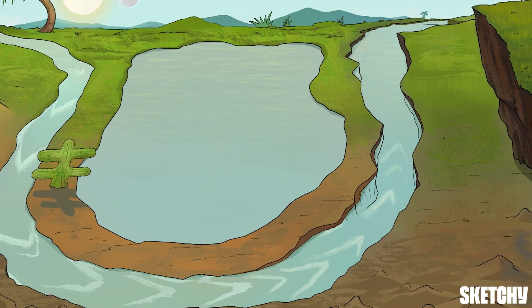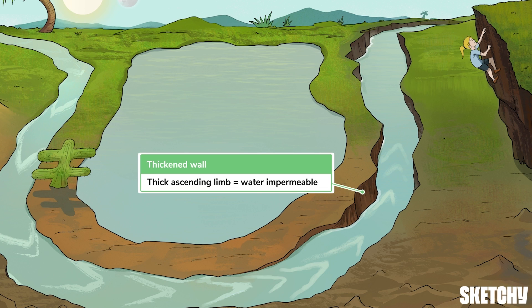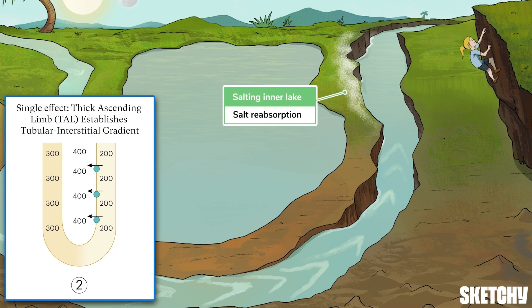Flow that runs counter to the descending limb is naturally found in the ascending limb, like water flowing back up through the right side of the river. You'll also notice the mountaineer climbing up the mountain, just as ascending flow runs up the loop of Henle. Most of the ascending limb is known as the thick ascending limb, because of its thick apical membrane. This membrane serves as an important barrier that is impermeable to water — and this impermeability is very important, because it allows salt, and salt alone, to move out into the interstitium from the ascending limb.